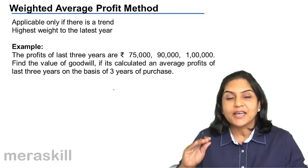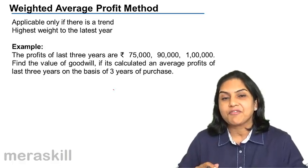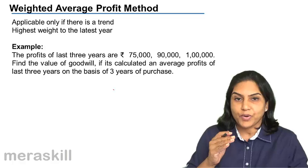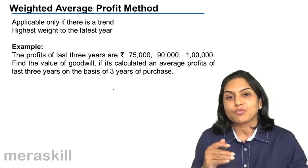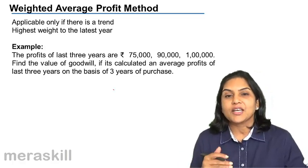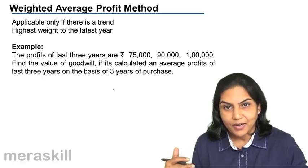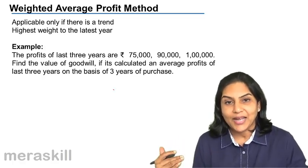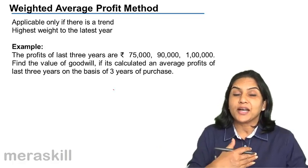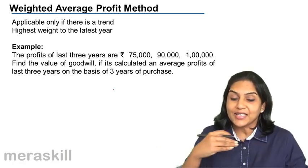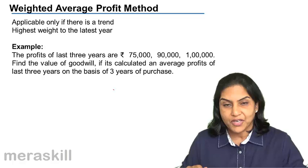When there is an increasing trend, let's say five years back the profit was one lakh, four years back it was one lakh 25, three years back it was one lakh 50, next it's one lakh 80, then two lakh 10. This shows a generally increasing trend over the last five years.